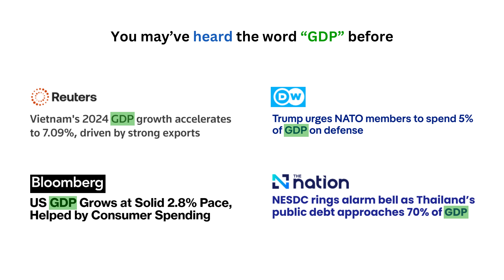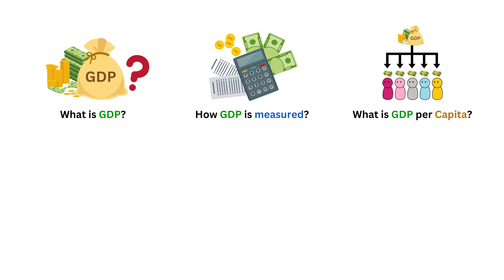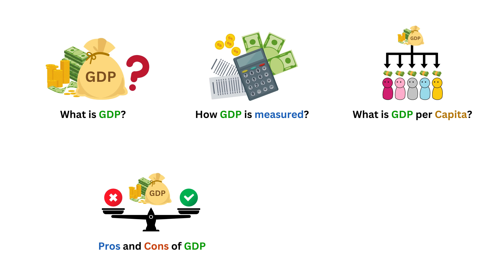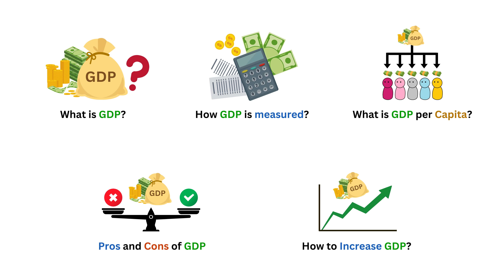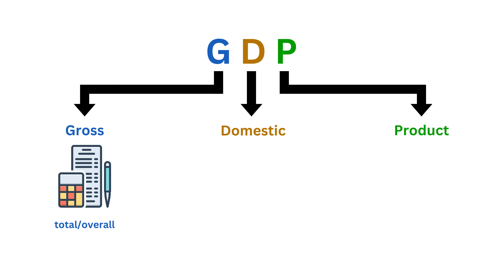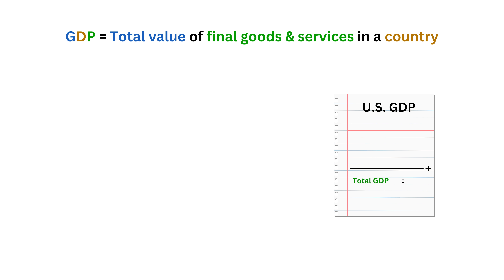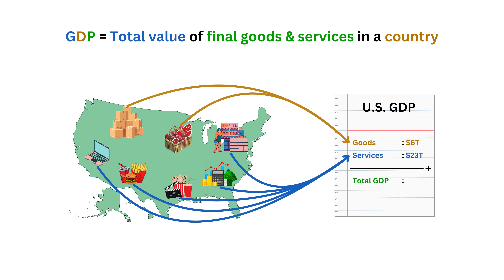In this video we'll talk about what GDP is, how it's measured, what GDP per capita is, some pros and cons, and how to increase the GDP. The word GDP stands for Gross Domestic Product. Gross means total or overall, domestic means it happens within a country's border, and product means goods and services. So GDP is the total value of final goods and services produced within a country in a specific time period, usually a quarter or a year.